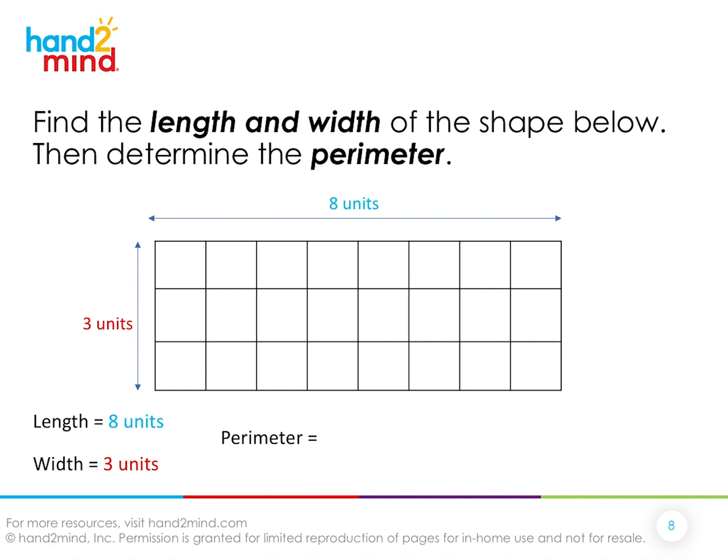To find the perimeter, remember, if this is 8 units, then the bottom side is also 8 units. If this is 3 units, then the right side is also 3 units. So you do the 8 units here plus 8 units here, and the 3 units here plus 3 units here. If you add all of them together, your perimeter is 24 inches.